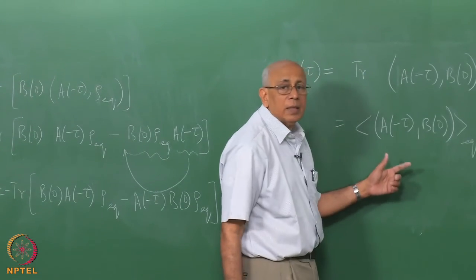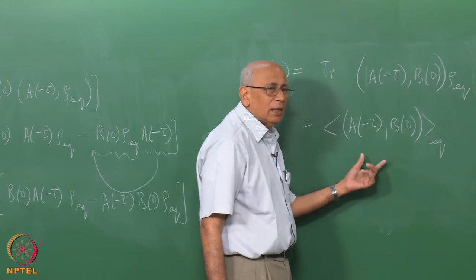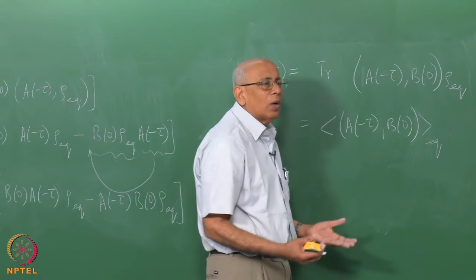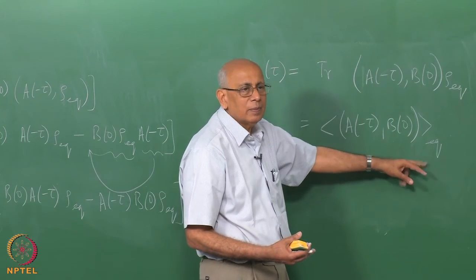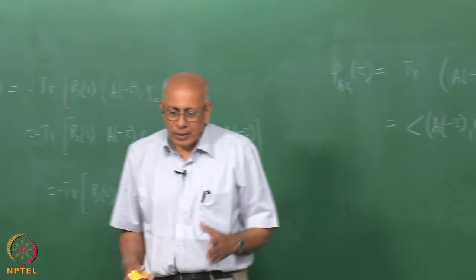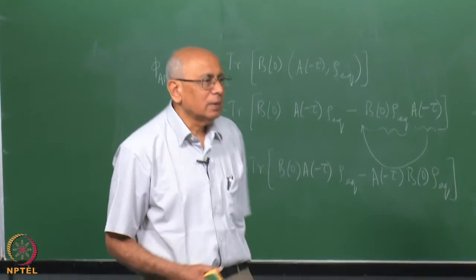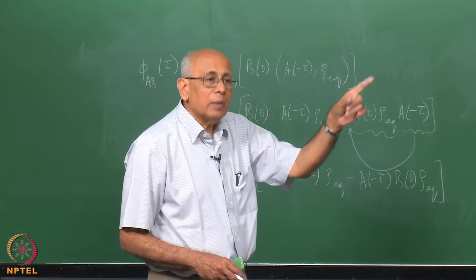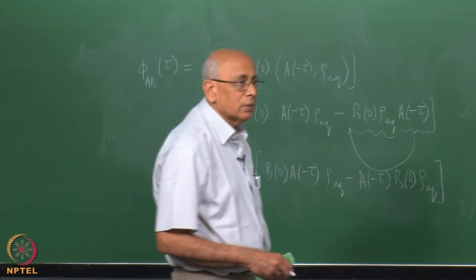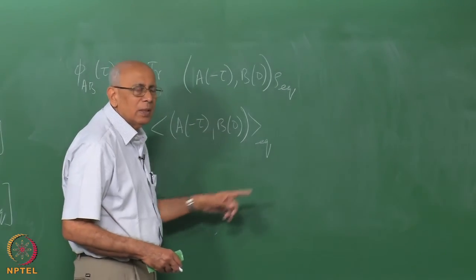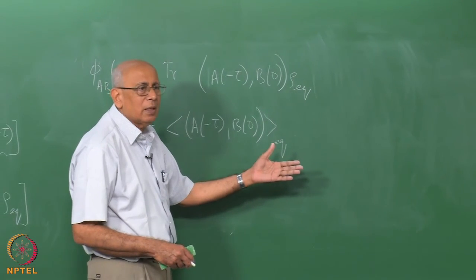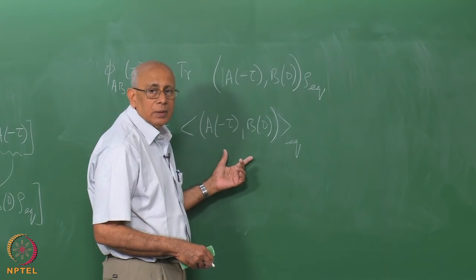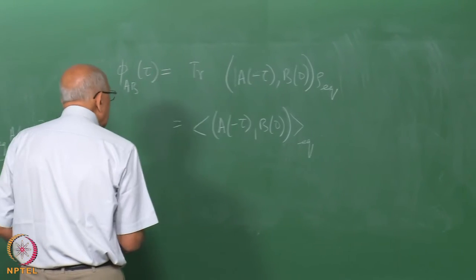This is the remarkable thing about causal linear retarded response: fluctuations govern this quantity. You are taking an average over thermal fluctuations in equilibrium. It says the fluctuations in equilibrium govern the behaviour of the average away from equilibrium in the presence of a perturbation. It is a profound statement — it looks like a simple derivation, being just first-order perturbation theory plus statistical physics, but it is already a very deep result.